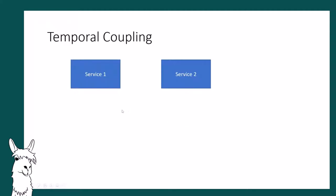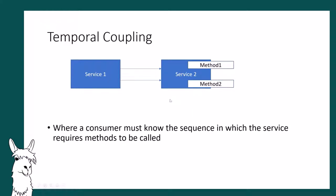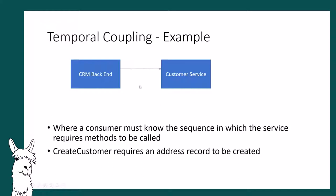Temporal coupling is a bit different — it's related to the sequence of execution. Service one calls service two, executes a method, then calls it again and executes another method. If service one needs to know the order in which those methods have to be called, that's temporally coupled. For example, a CRM backend calls a customer service: first create the address, then create the customer. You can't create a customer unless the address has been created beforehand.